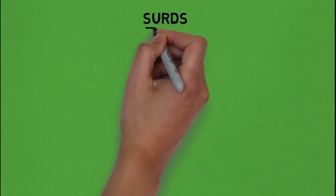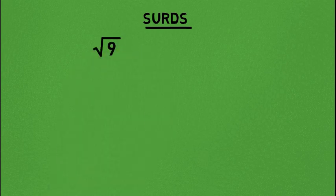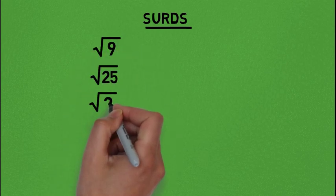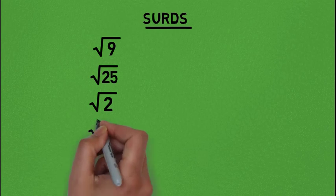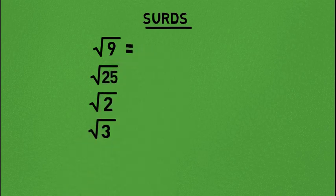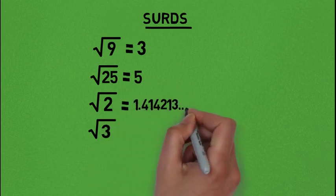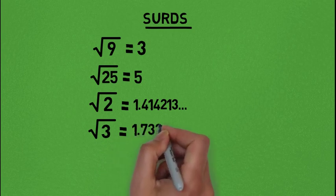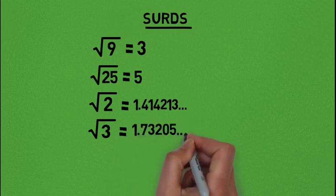Today we are going to be treating sets. Before we do, let's look at the following examples: root of 9, root of 25, root of 2, and root of 3. The results are: root of 9 gives 3, root of 25 gives 5, root of 2 gives 1.414213, and root of 3 gives 1.73205.